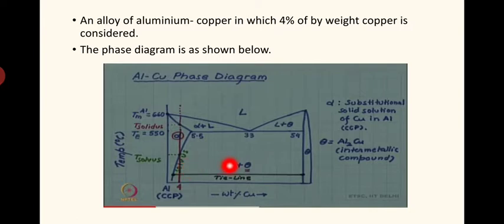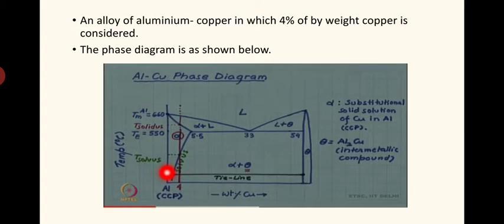Why do we go for quenching? If we draw a tie line, we can see that with slow cooling the weight percentage of copper in the final product corresponds to a much smaller value. With fast cooling — shown by a vertical line — the weight percentage of copper in the final product remains at 4%. When slow cooling is done, the copper content follows the solvus line down to a much lower value.